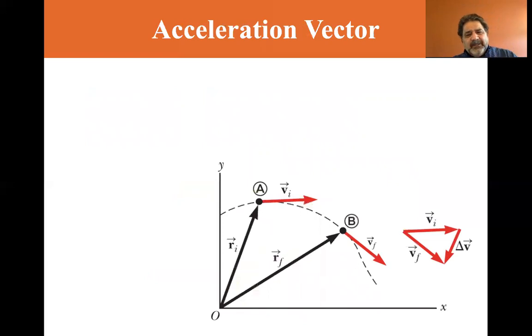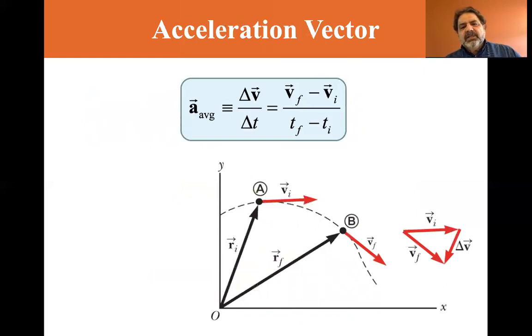Okay. The acceleration vector. Now if we look at how velocity changes, you can see V final minus V initial is delta V. So the average acceleration is defined as the change in velocity over the time period involved. So V final minus V initial divided by T final minus T initial.